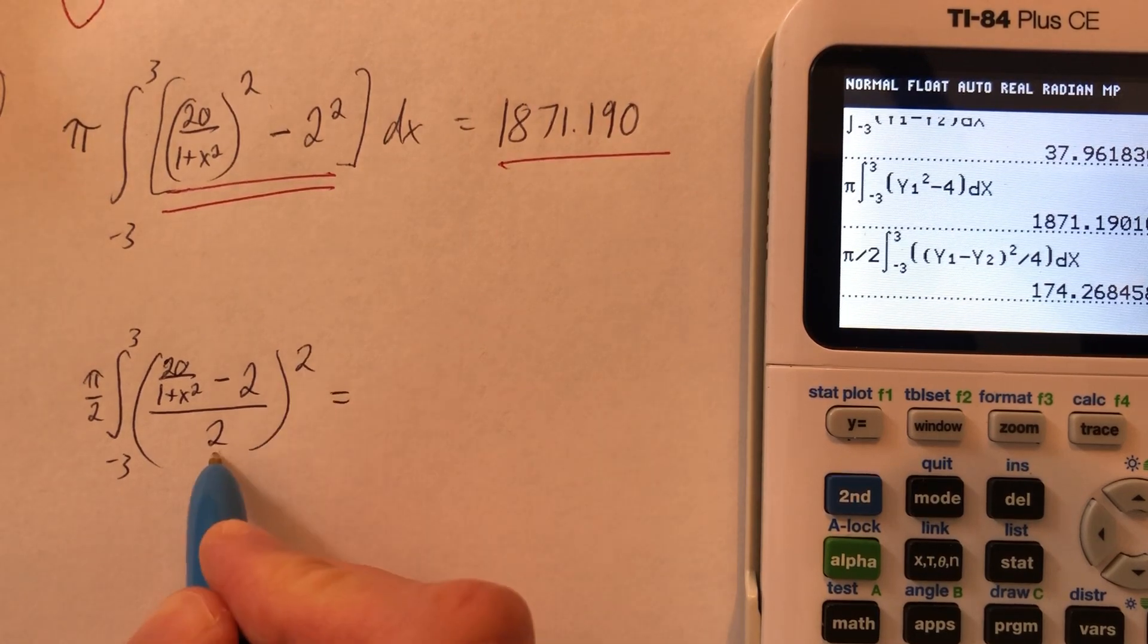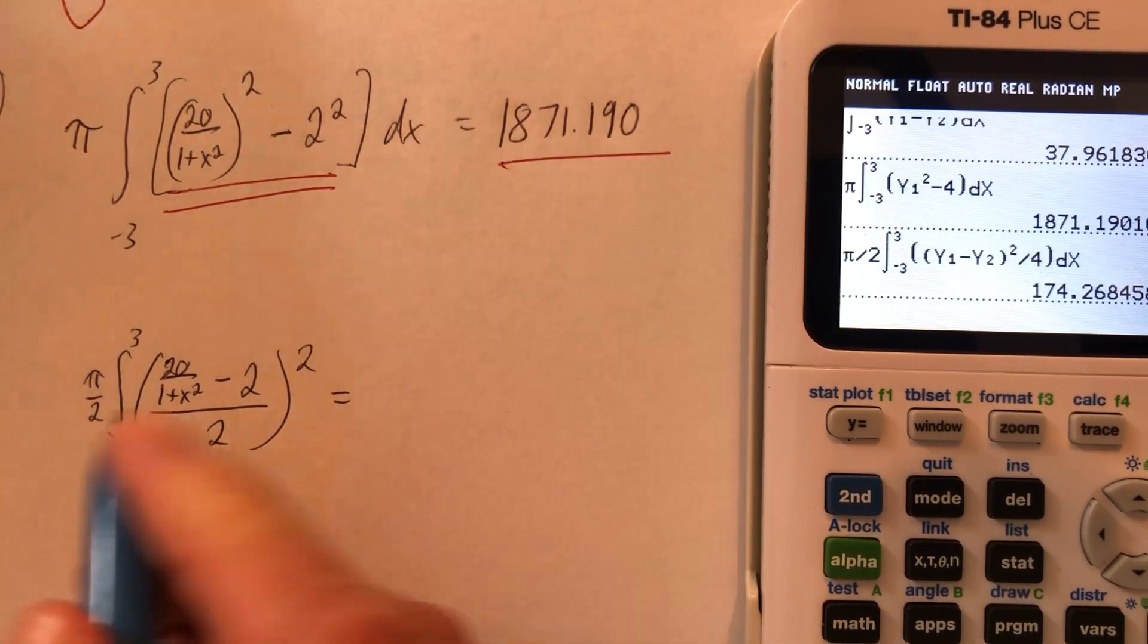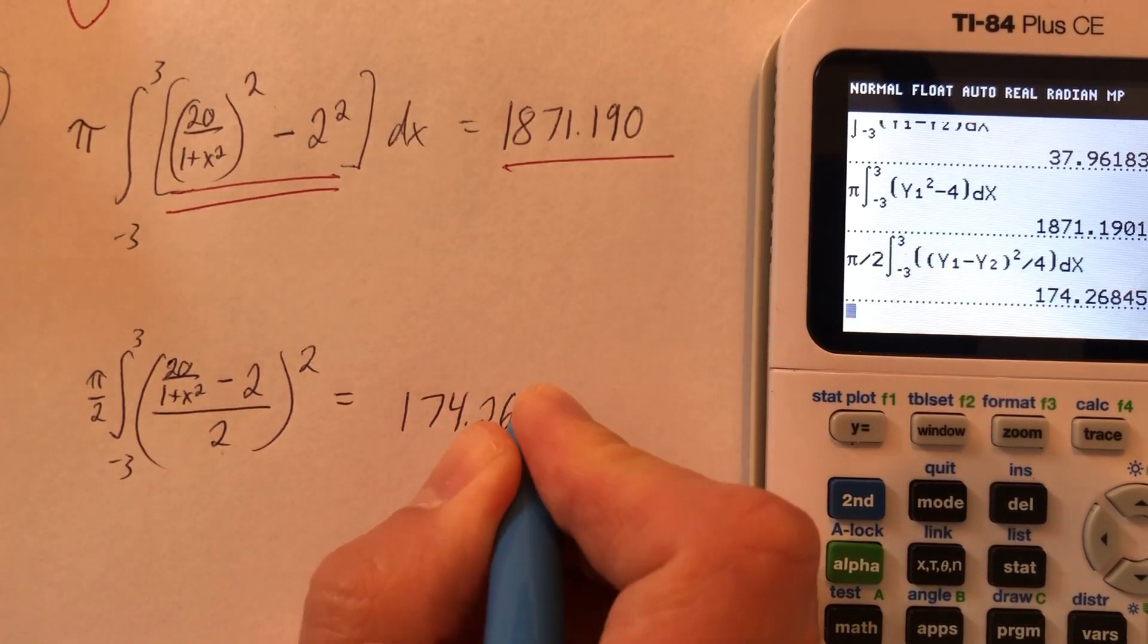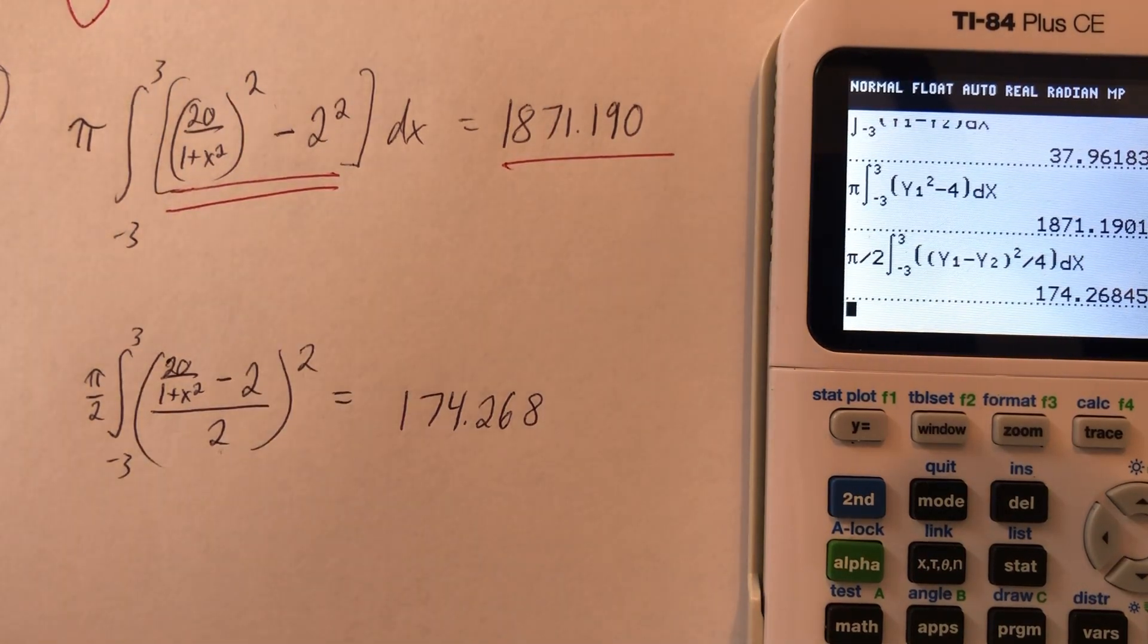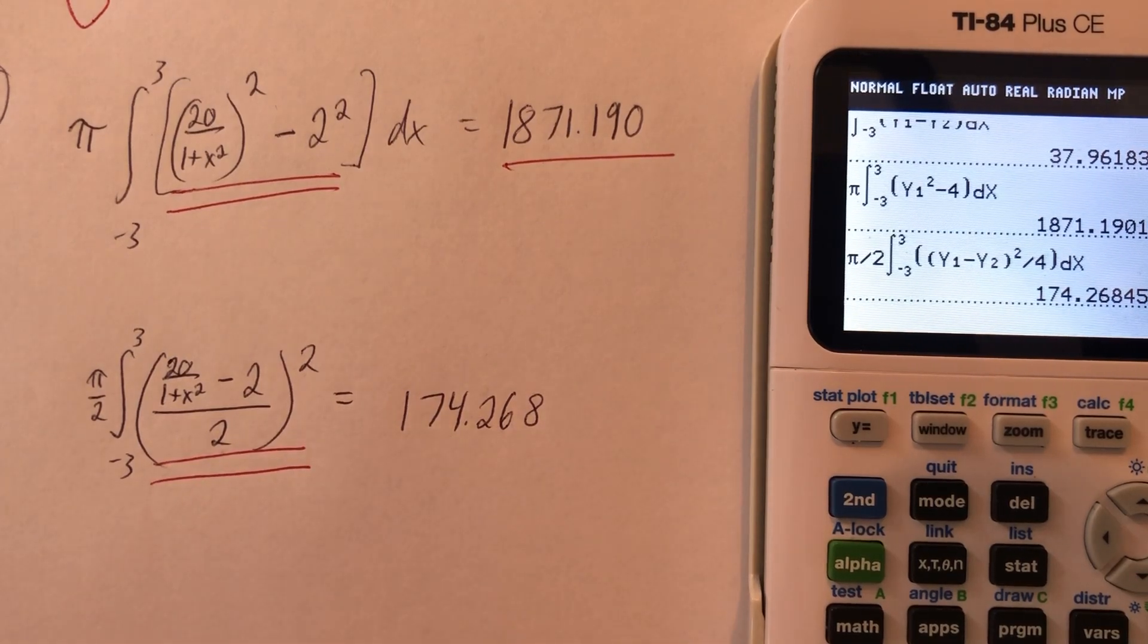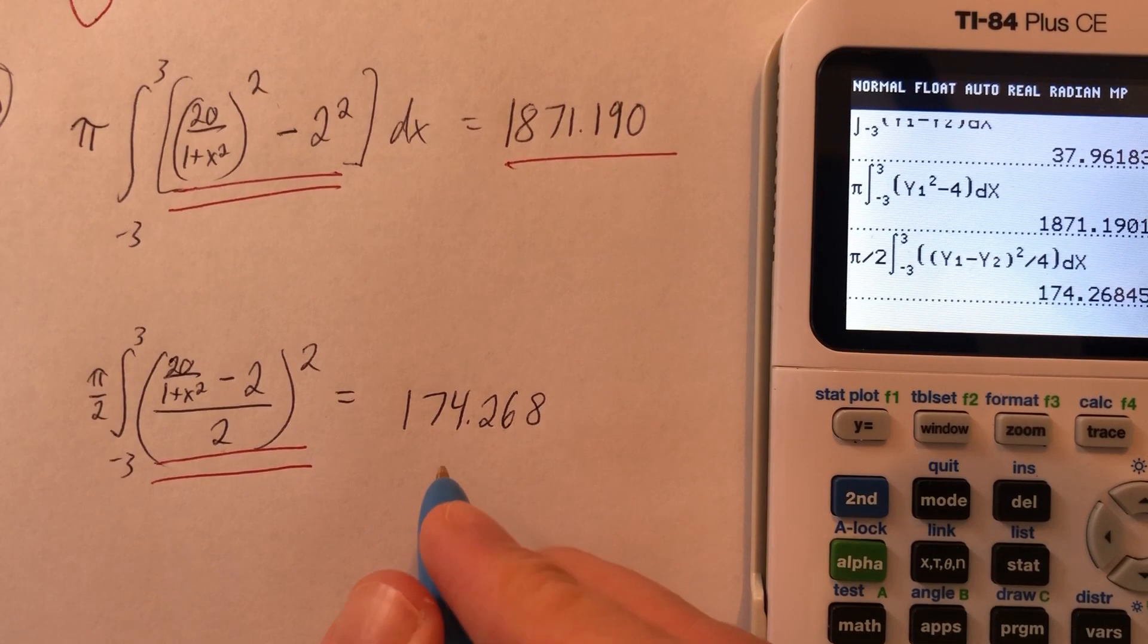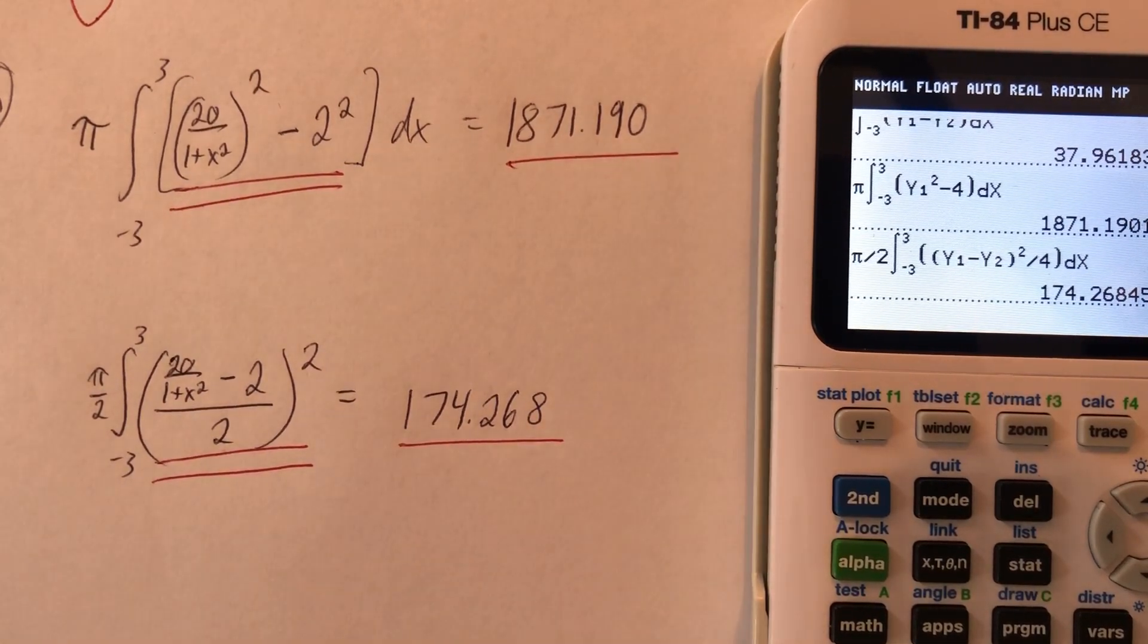But you could say, well, this, of course, is 4, and then that 4 comes out and you have pi over 8. You could do the same thing right there. It's fine. Anyway, 174.268. And that would be cubic units. And let's see exactly what they were looking for on this one. Two points for that. And that probably would also include this constant out front because it's kind of important. And one point for that. That's right.